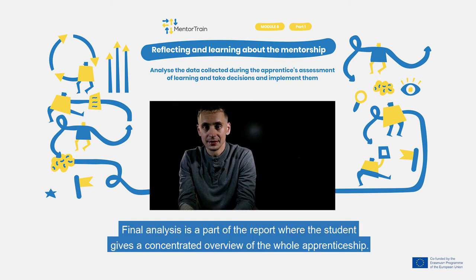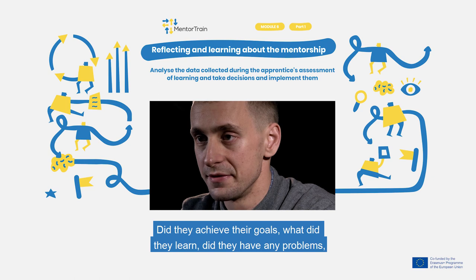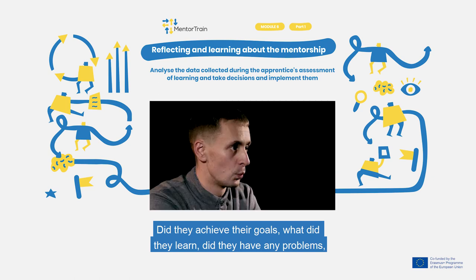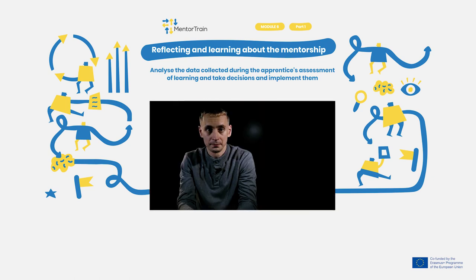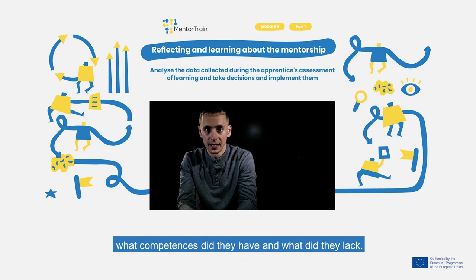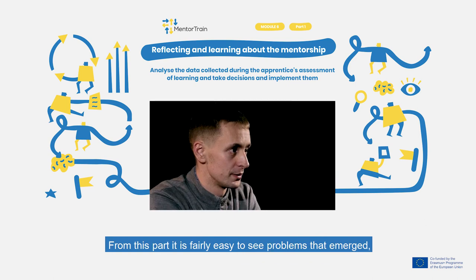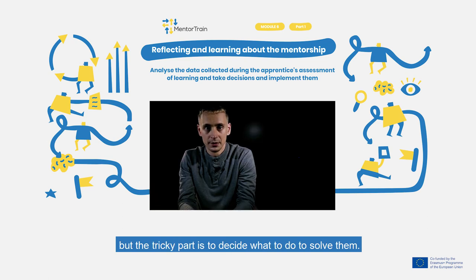The final analysis is a part of the report where the students give a concentrated overview of the whole apprenticeship. Did they achieve their goals? What did they learn? Did they have any problems? What competencies did they have and what competencies did they lack? From this part, it is fairly easy to see problems that emerge. But the tricky part is to decide what to do to solve them.